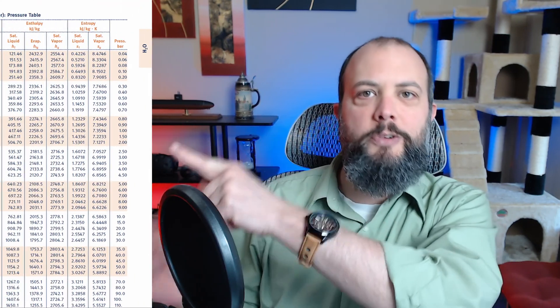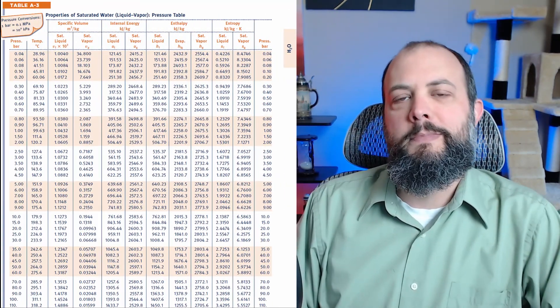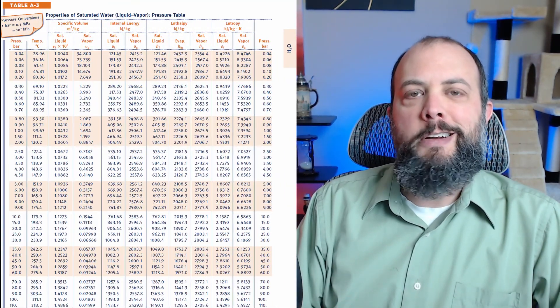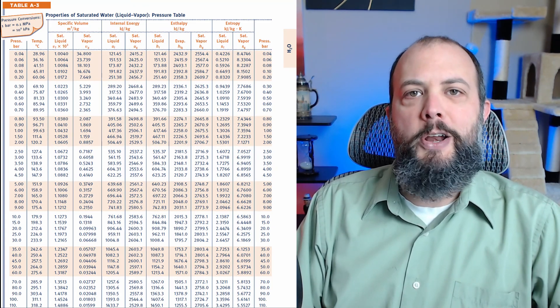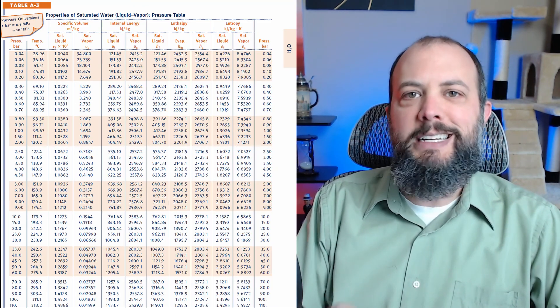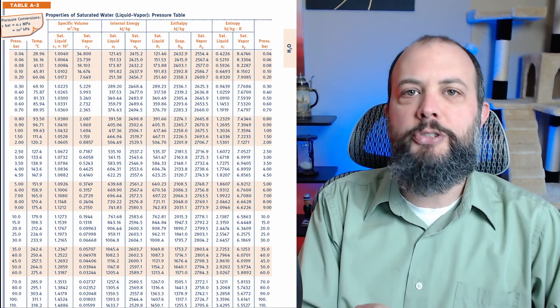If you're taking engineering thermodynamics, you've probably noticed about 50 pages in the back of your textbook with tables that look sort of like this one. And the worst part about it is when you go back to look up a number, the number you find is usually not listed in the table. It's actually in between two rows or two columns.